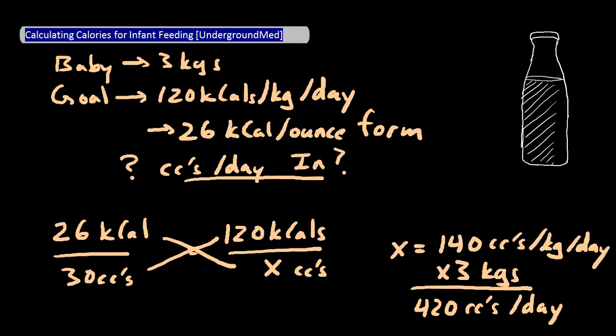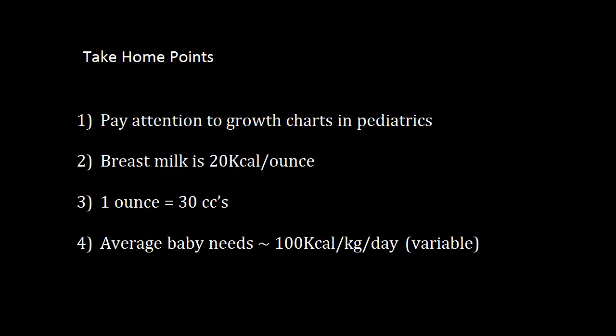So let's go over some of the important facts. So we want to always pay attention to growth charts in pediatrics. We want to remember that the breast milk is 20 kilocalories per ounce. And that an ounce is 30 cc's. And our average baby is going to take in 100 kilocalories per kg per day. And that's going to be variable. Thank you for watching. And we hope this was very helpful for you.